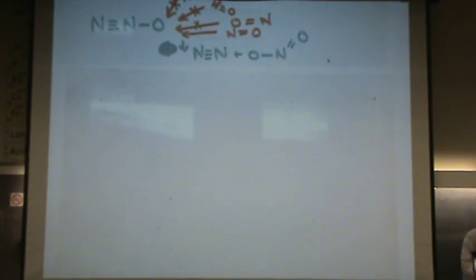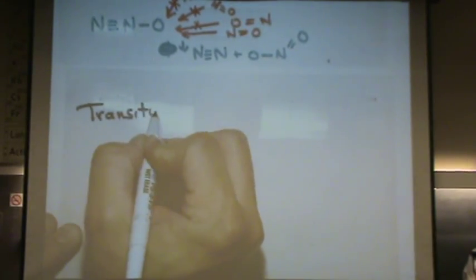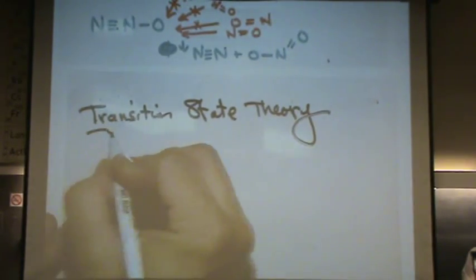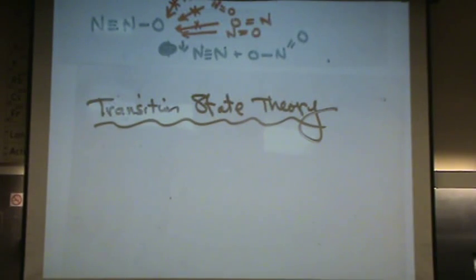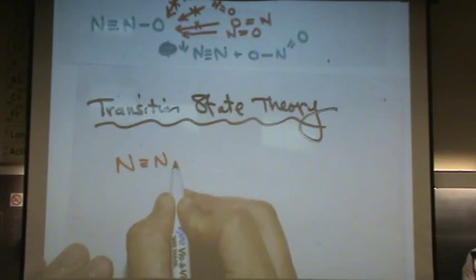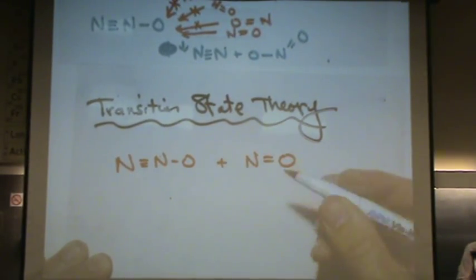Something that sort of goes along with this, with the orientation, in this reaction I wrote out as an example, is what's called the transition state theory. So, let's take our example of the N2O plus the NO reacting.